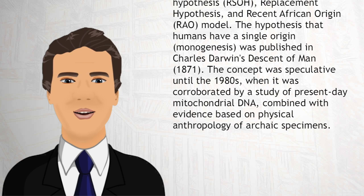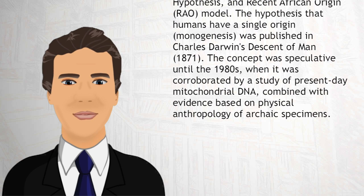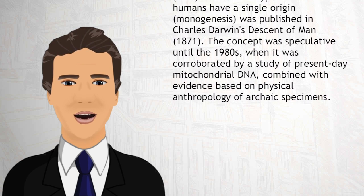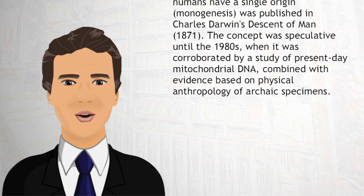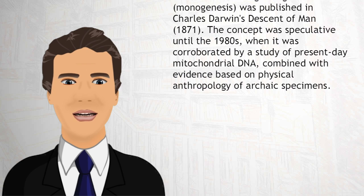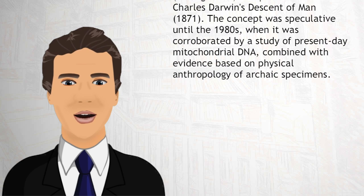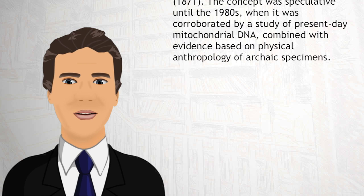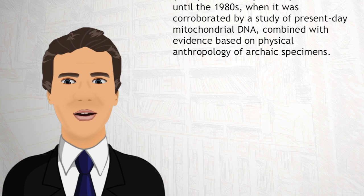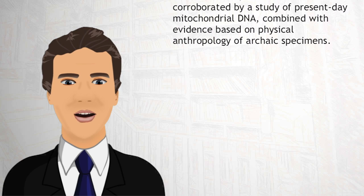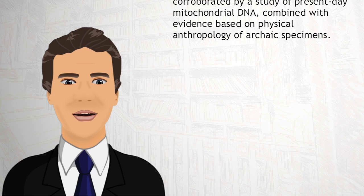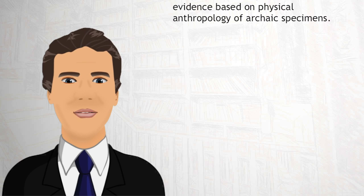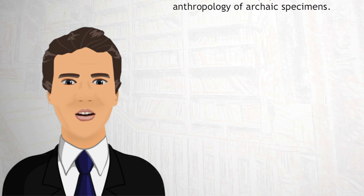The hypothesis that humans have a single origin, monogenesis, was published in Charles Darwin's Descent of Man in 1871. The concept was speculative until the 1980s, when it was corroborated by a study of present-day mitochondrial DNA, combined with evidence based on physical anthropology of archaic specimens.